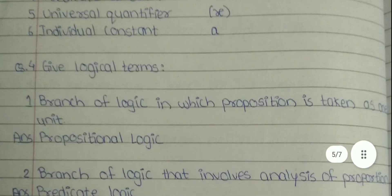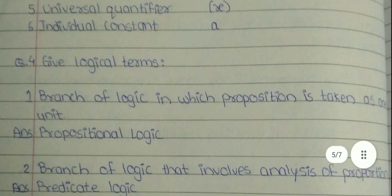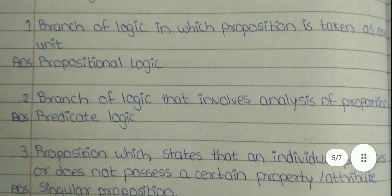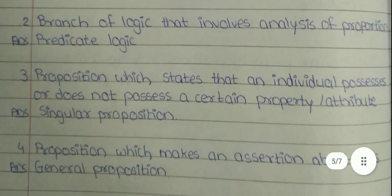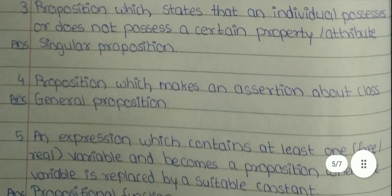Question number 4: Give logical terms. First, branch of logic in which proposition is taken as one unit — the answer is propositional logic. Second, branch of logic that involves analysis of proposition — the answer is predicate logic. Third, proposition which states that an individual possesses or does not possess a certain property or attribute — the answer is singular proposition. Fourth, proposition which makes an assertion about class — the answer is general proposition.